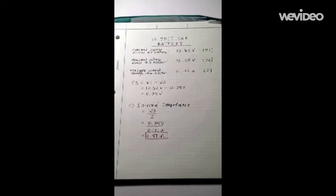The final step in finding the internal impedance of a 12-volt car battery is to do two calculations based on the values achieved in the previous steps.